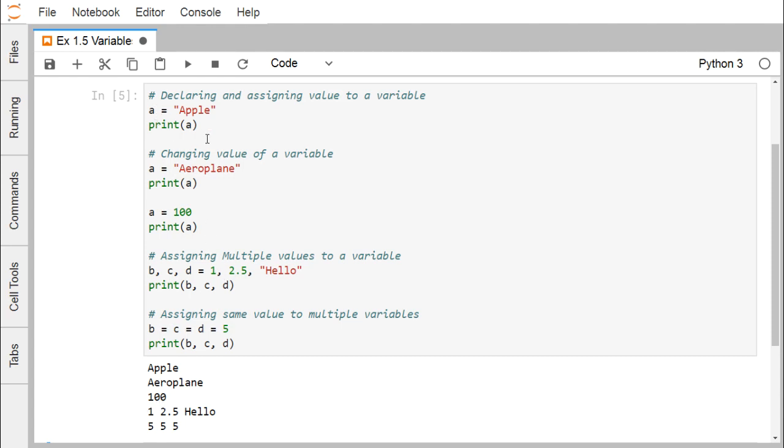You can find that the same variable sometimes may be initialized with a string, sometimes with an integer, and that is allowed in Python because Python is a dynamic type language. That means the variable's data type will be decided during runtime.